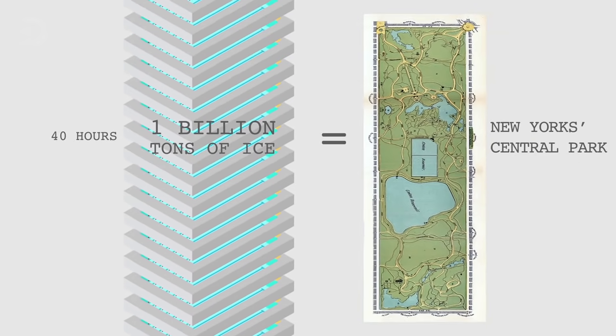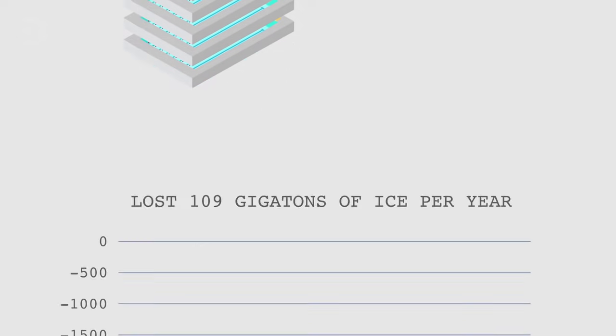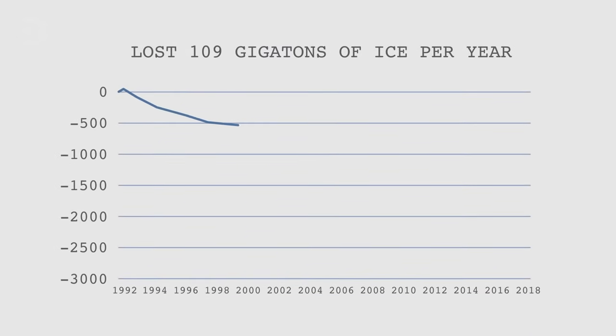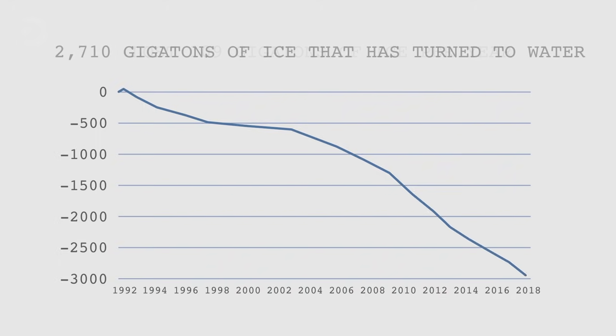Now imagine that for this 25-year period between 1992 and 2017, Antarctica lost 109 gigatons of ice per year. That adds up to 2,710 gigatons of ice that has turned to water.